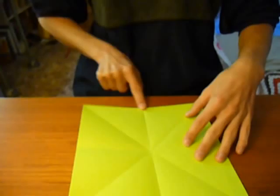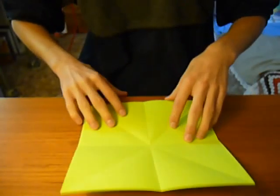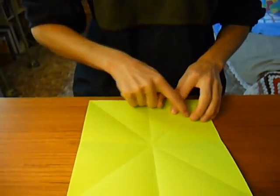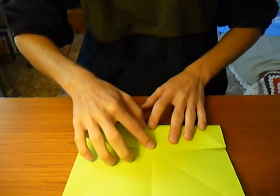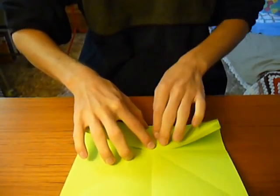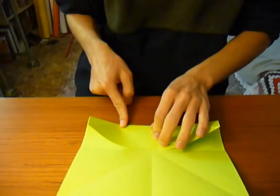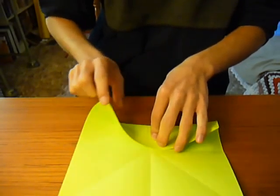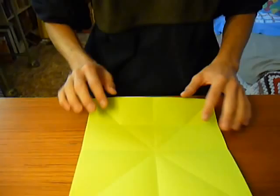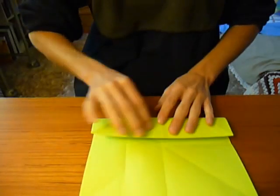Now take this edge and bring it up to the halfway line, creasing only in between the two diagonal edges. Only to there, and only to there. So it doesn't go beyond this diagonal line which marks the center of the square. And repeat that on all four sides.